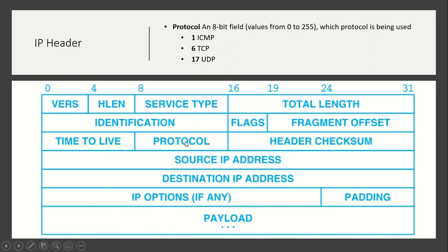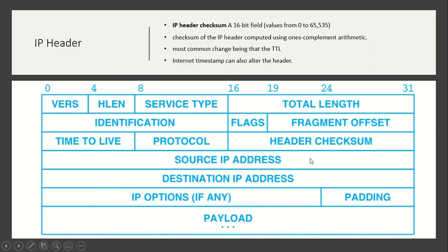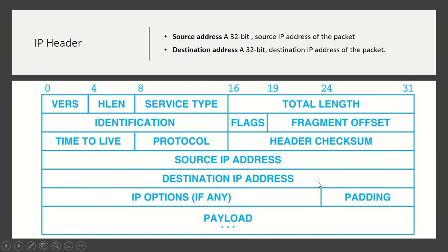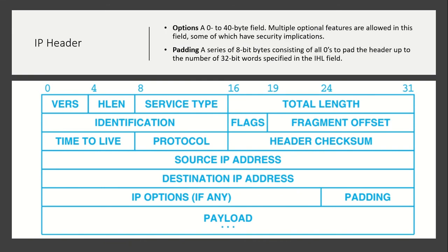Then header checksum — a 16-bit checksum calculated over the header. The receiver checks whether the checksum of the received packet matches the one sent by the sender; if not, the packet is considered corrupted. Then source IP address — for IPv4 this is a 32-bit address — followed by destination IP address. Then IP options if any, and padding bits to fill the word up to 32 bits.